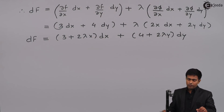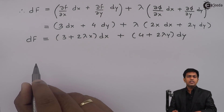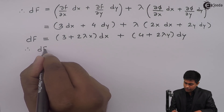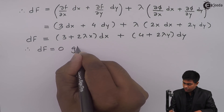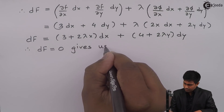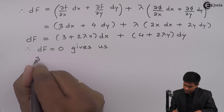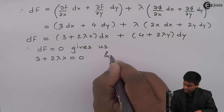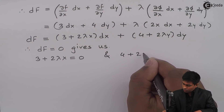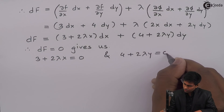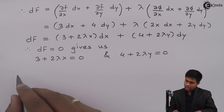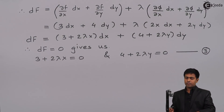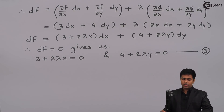Setting dF = 0 gives us: 3 + 2λx = 0 and 4 + 2λy = 0. This is equation number three.